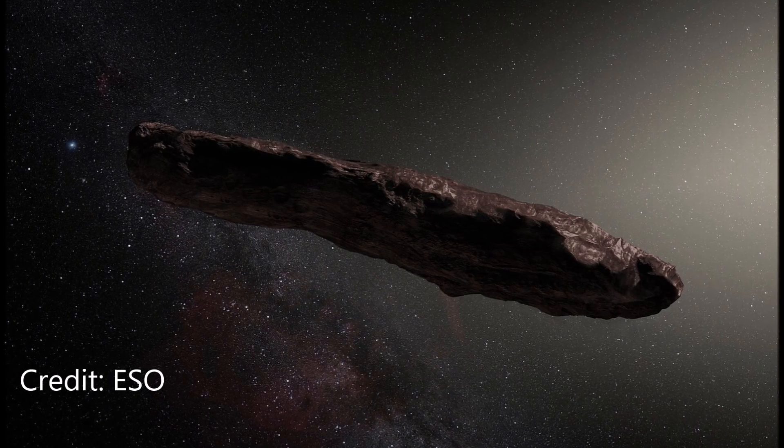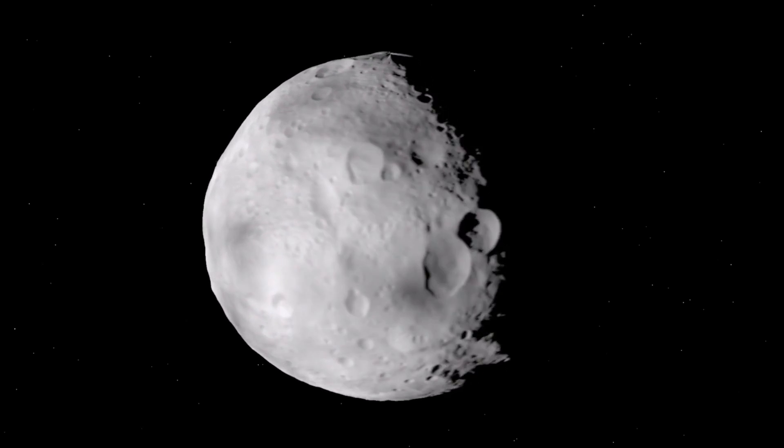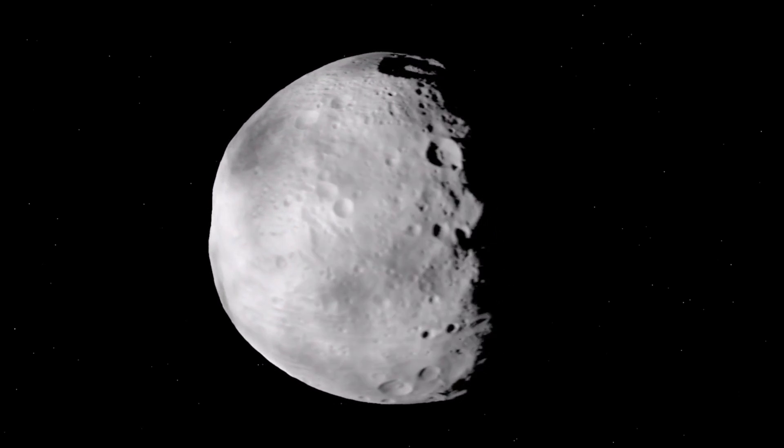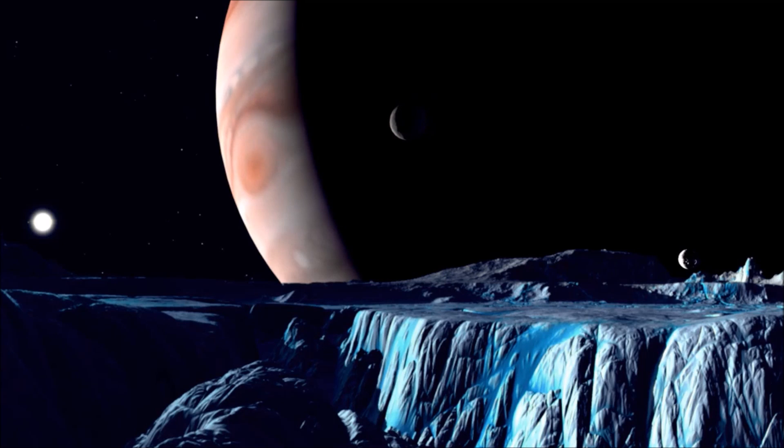But in reality it's not the only object of suspected interstellar origin in this solar system. Jupiter is large enough to capture these objects and put them into orbit around the sun. This is thought to happen only occasionally, something on the order of once every 60 million years. But that's actually a lot given that the solar system has been here for 4.5 billion years.